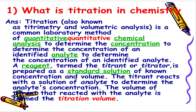Question number 1: What is titration in chemistry? The answer is titration is a common laboratory method of quantitative chemical analysis to determine the concentration of an identified analyte. A reagent termed the titrant or titrator is prepared as a standard solution of known concentration and volume.